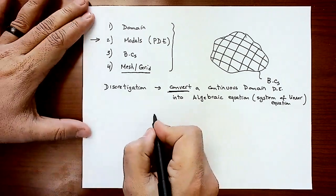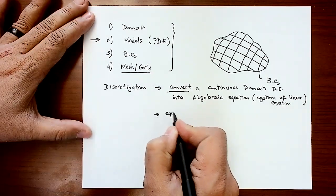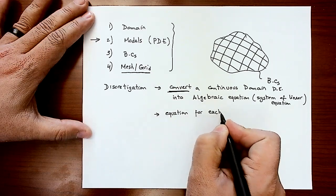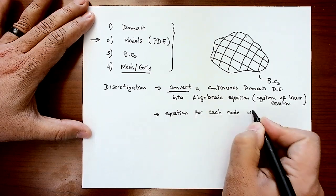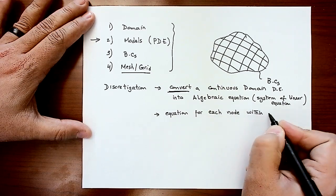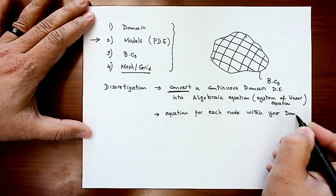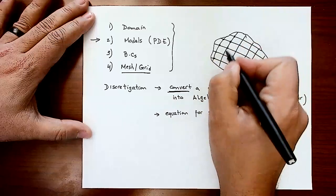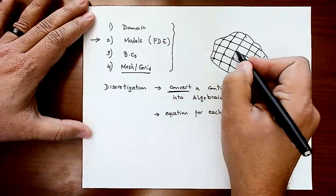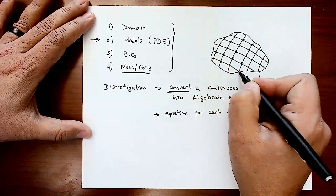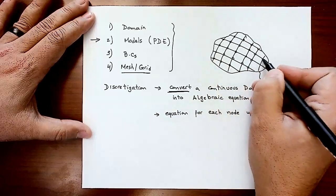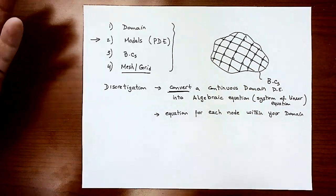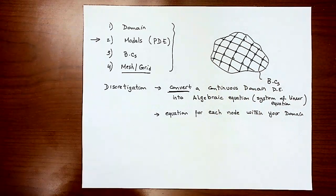Discretization provides an equation for each node within your domain. If your domain has 25 nodes, you end up with 25 equations — each node is represented by one equation. That's why discretization is an approximation of the continuous differential equation that applies to your domain.